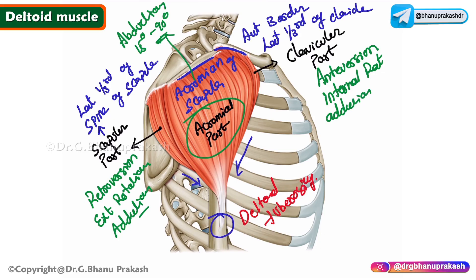The deltoid is supplied by the axillary nerve. Whenever there is an injury to the axillary nerve — for example, due to fractures of the surgical neck of the humerus — there will be paralysis of the deltoid muscle. This is what we need to know about the anatomy of the deltoid.